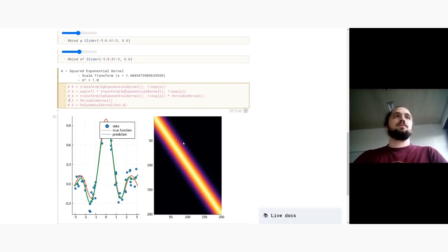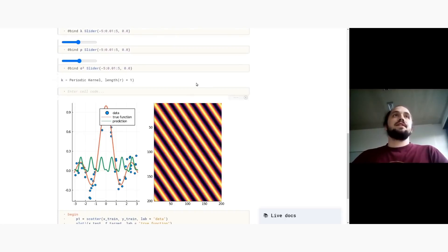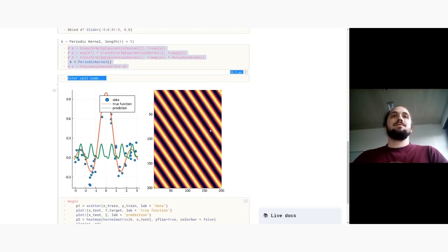And if I try to use a different kernel, for example, the periodic kernel, here you see that you get this periodicity happening directly in the data. And we get now again, as a prediction, a periodic function.